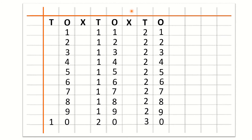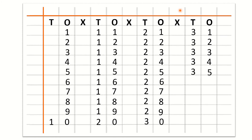Now children we will learn how to write 31 to 40 counting with the method of tens and ones. So after O we will write cross and we will not write anything under cross. After cross we will write T for tens and O for ones. Now we will write 3 under T and 1 under O for 31. After 31: 32, 33, 34, 35, 36, 37, 38, 39, 40.